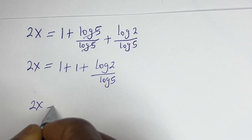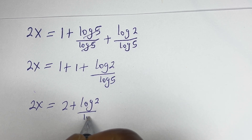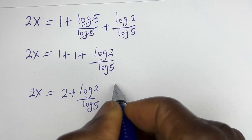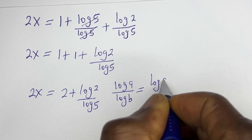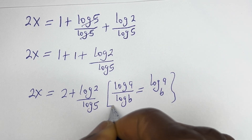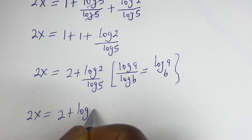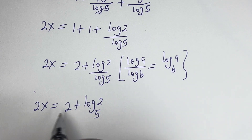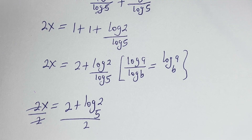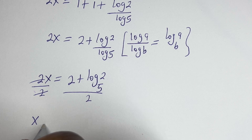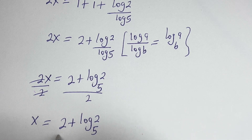Then we have 2s is equal to 2 plus log 2 over log 5. Take note that if you have log a over log b, this is equal to log a base b. Then this can be written as 2s is equal to 2 plus log 2 base 5. Dividing by 2, s is equal to 2 plus log 2 base 5, all over 2.